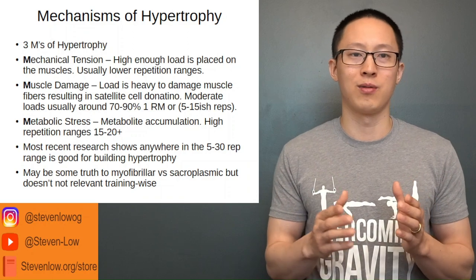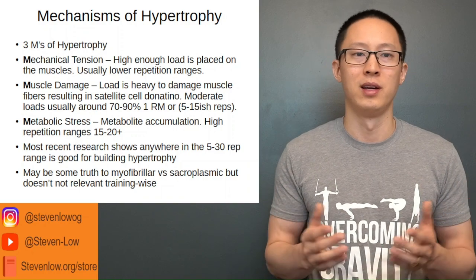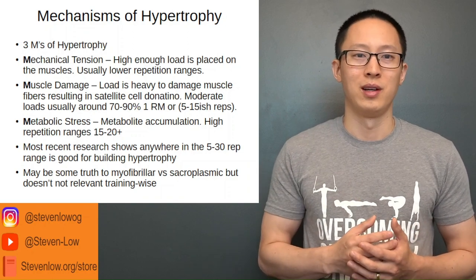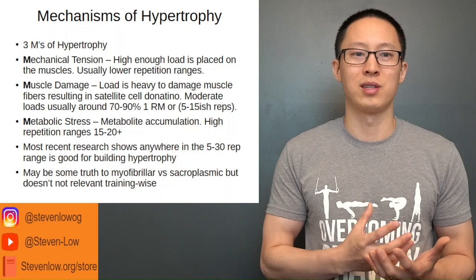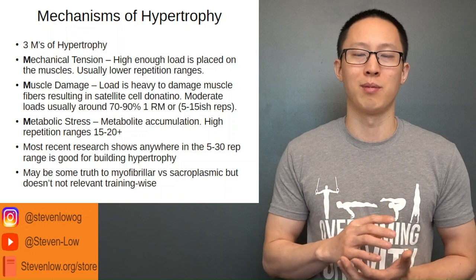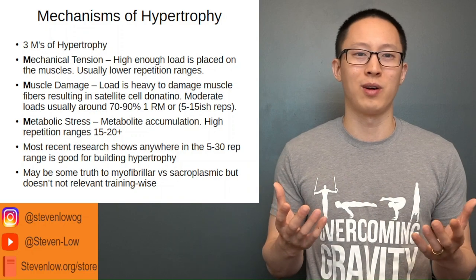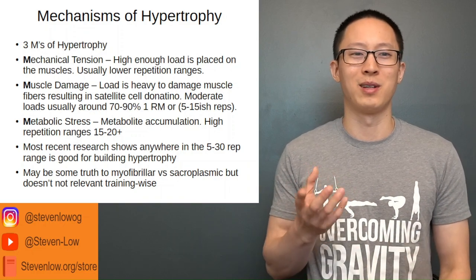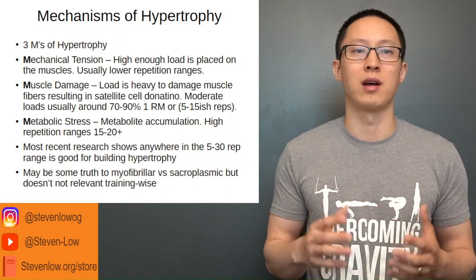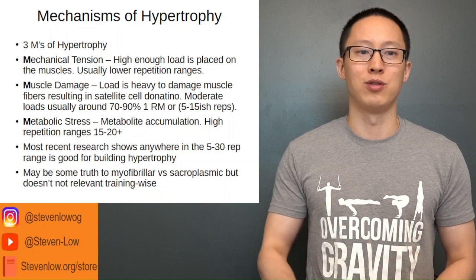There was some debate on whether there is a difference between myofibrillar and sarcoplasmic hypertrophy. High reps with metabolic stress were thought to increase fluid retention in the muscles, making them bigger but not as effectively as myofibrillar hypertrophy — which is the increase of the protein components within the muscle, the myosin and actin. However, it's not really relevant from a training perspective, and the research has been back and forth. In our case, a bigger muscle is generally going to be a stronger muscle as long as you're strength training, so it doesn't matter too much.